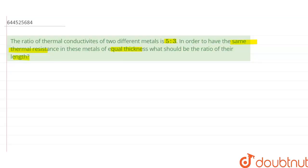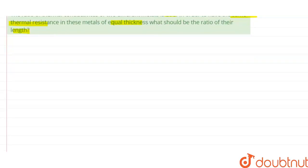In the question, they are saying that there are two metals. Suppose these are two metals, metal 1 and metal 2, having thermal conductivity k1 and k2, and thermal resistance r1 and r2.